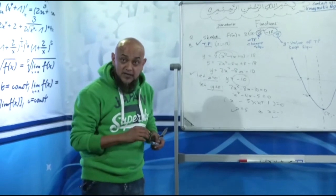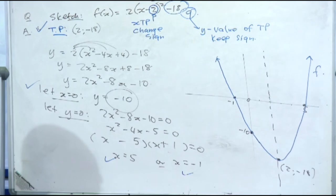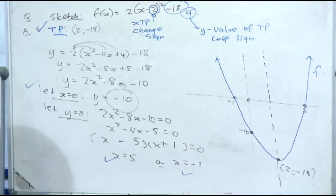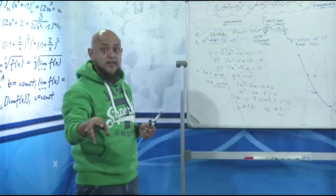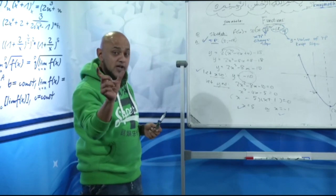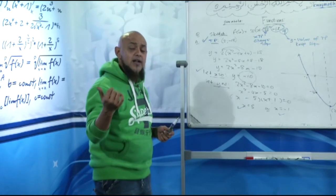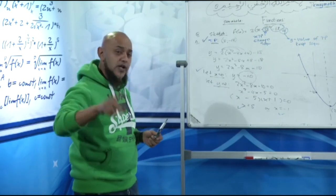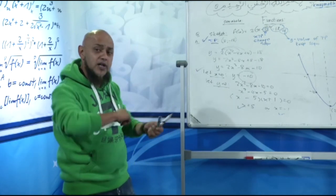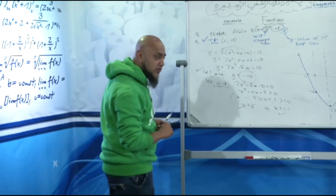To summarise: Step 1 — take out your turning point: p value, change the sign; q value, keep the sign. Step 2 — remove the brackets to get a trinomial. Step 3 — let x = 0 to find the y-intercept. Step 4 — let y = 0 to get two x-values. Plot everything on your graph and sketch. Done — problem solved.